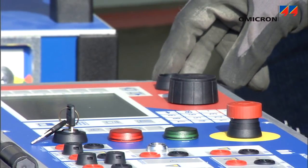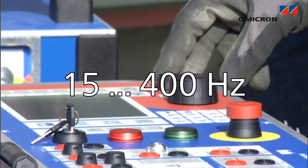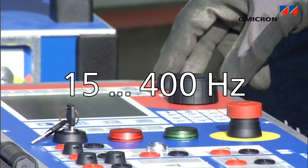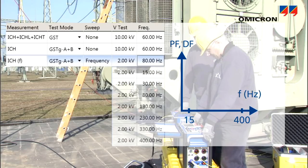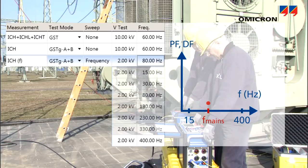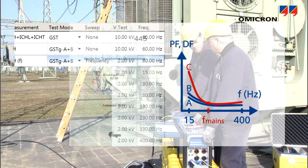The CPC100 and CPTD1 can cover a wide frequency range, from 15 to 400 Hz. Performing these measurements at several frequencies, rather than at mains frequency only, provides more comprehensive diagnostic information. Hence, it has been recommended by CIGRE.